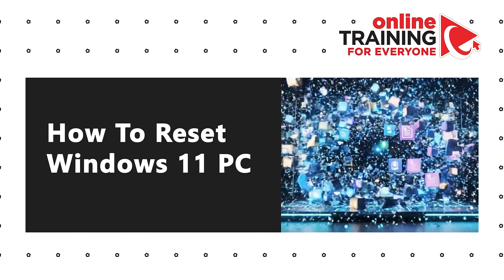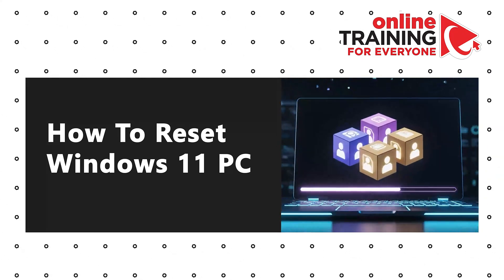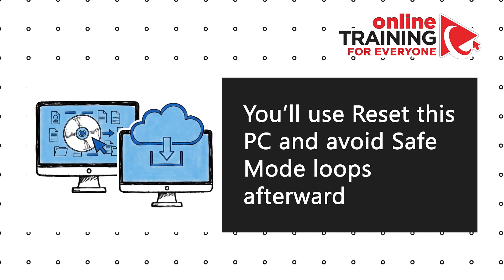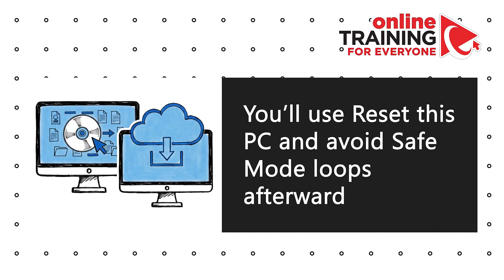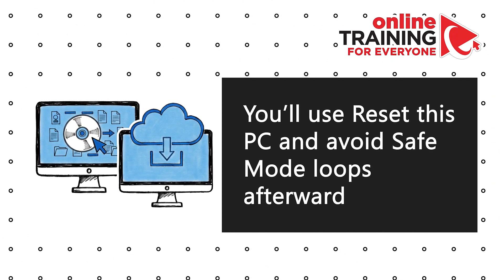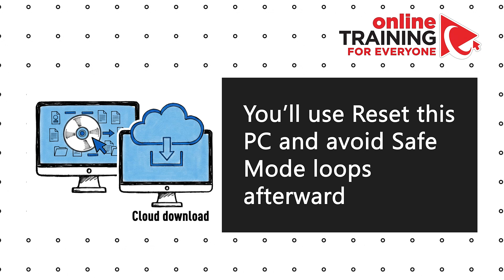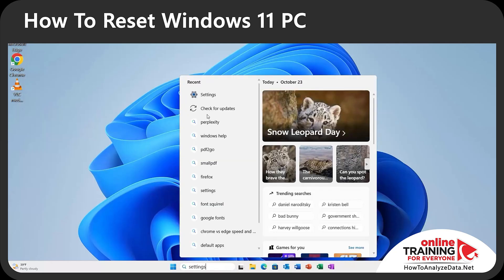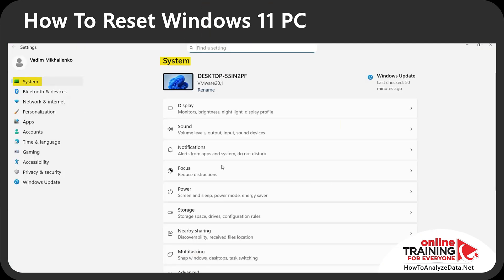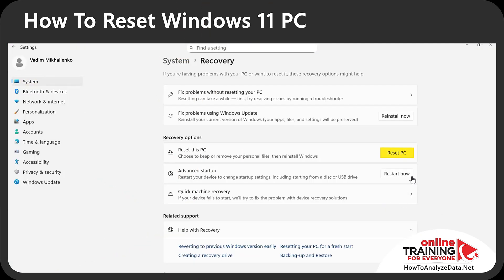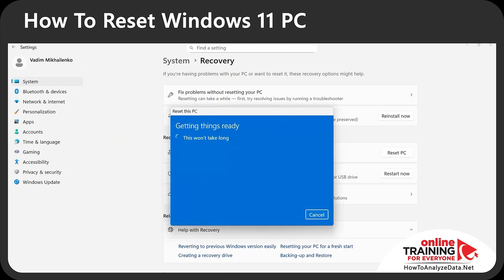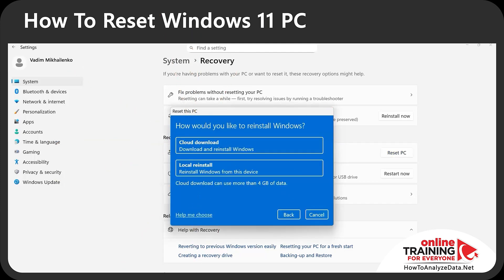Let me share how to reset your Windows 11 PC without losing your personal files. I'll show you how to Reset This PC and avoid safe mode loops afterward. To start the reinstall process, navigate to Settings, then System, then Recovery, and click the Reset PC button. I'll choose the option Keep My Files.